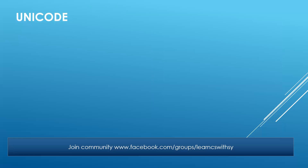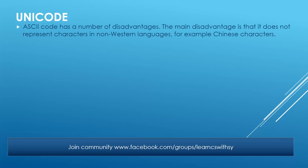Now, ASCII has certain disadvantages. The first disadvantage is it does not represent characters in non-Western languages, for example, Chinese. If you want to show some Chinese values, that is not supported by ASCII. Another limitation is that DOS and Windows use different character sets for some ASCII codes as well, which is also one of the limitations observed in ASCII code.